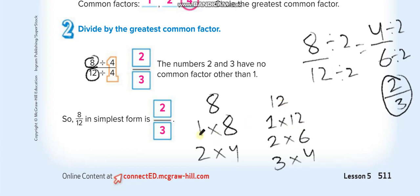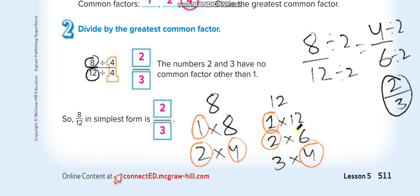Now find which factors are common to both. 1 is in both, 2 is in both, 4 is in both — 8 is not in 12's factors. So the common factors are 1, 2, and 4, and the greatest common factor is 4. That's why we divide by 4.